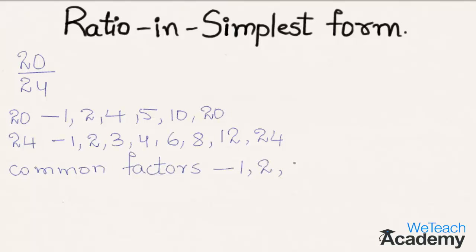The common factors are 1, 2, and 4. The greatest among these common factors is 4, so 4 is the greatest common factor. Let us divide the numerator and denominator by the greatest common factor, that is 4.